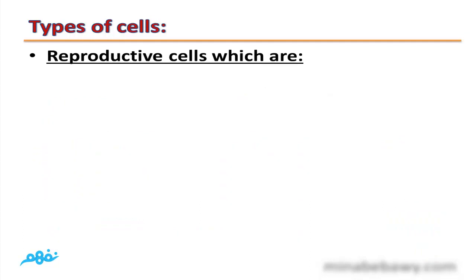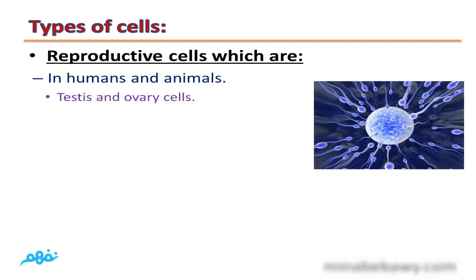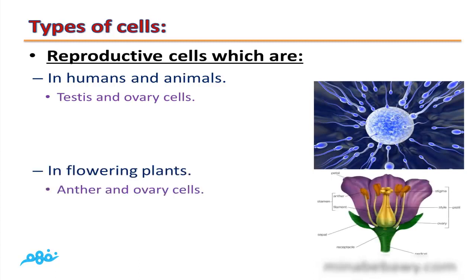The second type of cells is reproductive cells. In humans and animals, the cells of testes and ovary are reproductive cells. In flowering plants, the anther, which is the male reproductive organ in plants, and the ovary, which is the female reproductive organ in plants, are formed from reproductive cells. So we have two types of cells: somatic cells and reproductive cells.